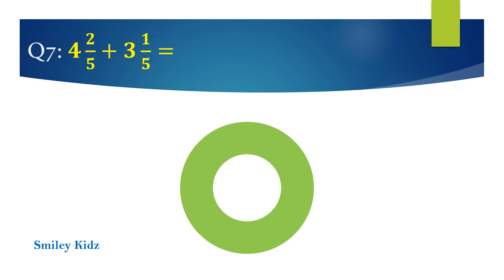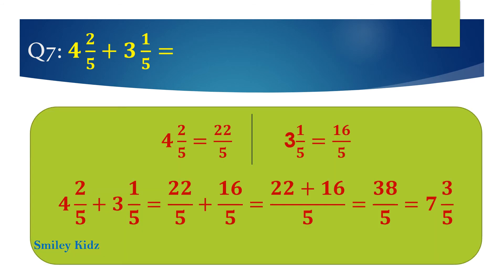The right answer is 7 and 3 by 5. To add mixed fractions, first convert them into improper fractions. 4 and 2 by 5 equals 22 by 5, and 3 and 1 by 5 equals 16 by 5. So 22 by 5 plus 16 by 5 equals 38 by 5, which equals 7 and 3 by 5.